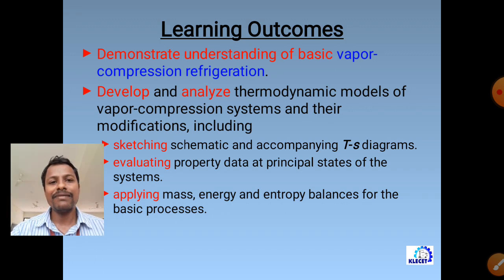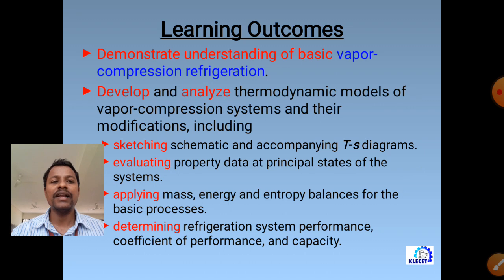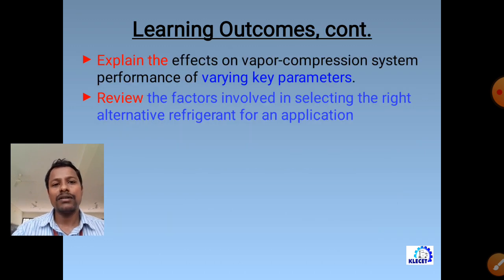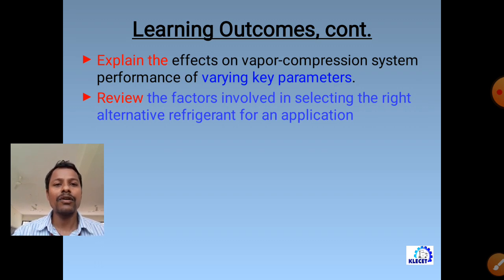Such a cycle is called a refrigeration cycle. This is a recap of basics studied in elements of mechanical engineering. The first key term is refrigeration effect: it is the amount of energy removed per unit time from the refrigerated space, also called the capacity of the refrigerator. Refrigeration effect is the heat absorbed from the refrigerated space per unit time by the evaporator.